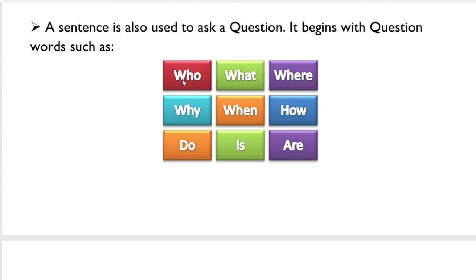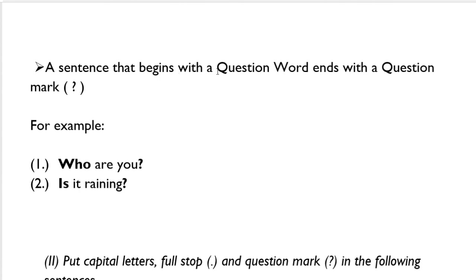You must repeat these words every day to remember them. Now see how we use a question mark with question words. A sentence that begins with a question word ends with a question mark. For example: Who are you? Who is the question word and the sentence ends with a question mark. Number 2: Is it raining? Is is a question word and the sentence ends with a question mark.